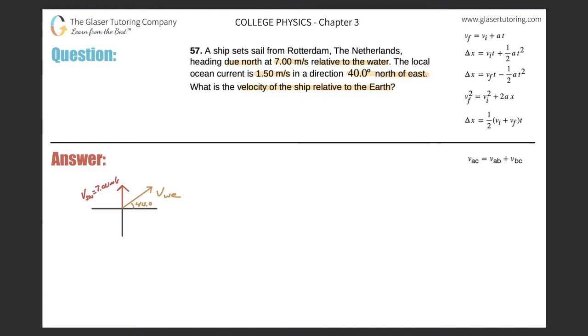So here's a little picture I have. The ship is heading due north at a velocity of 7 meters per second. Now it's important to know what is that velocity in relation to? Well, that velocity will be in relation to the water, right? Because that's what they say. They say relative to the water. So that's the velocity of the ship relative to the water.